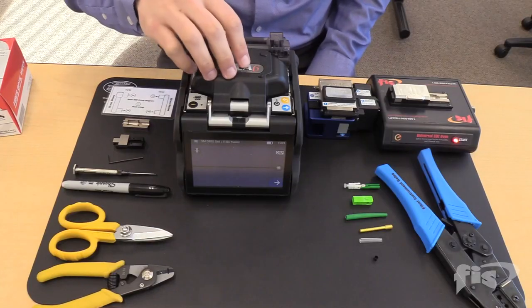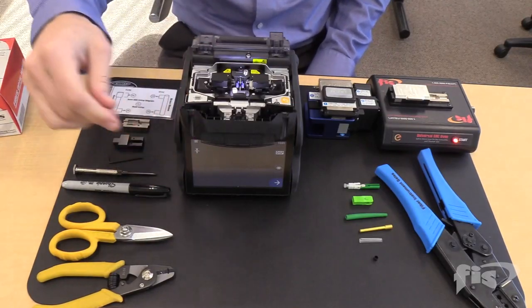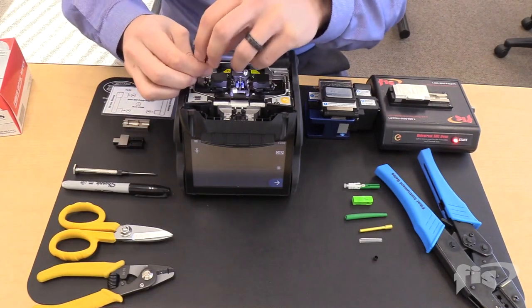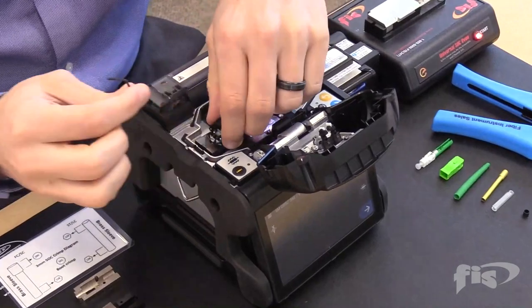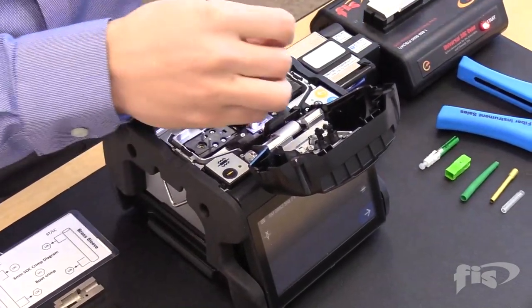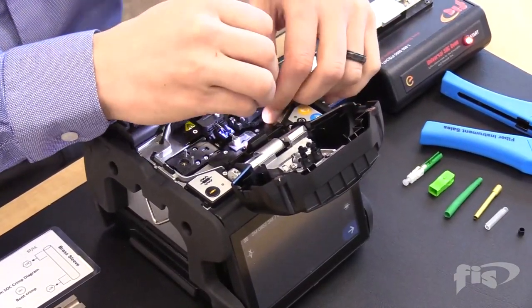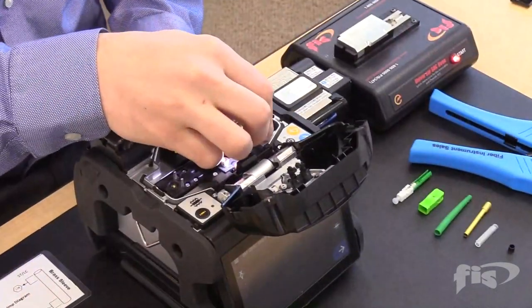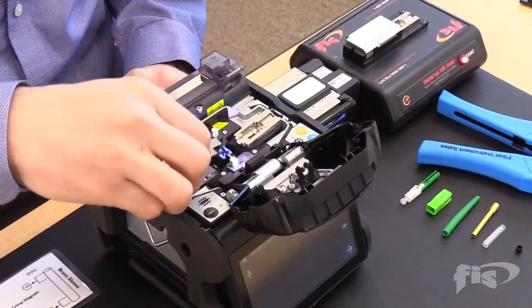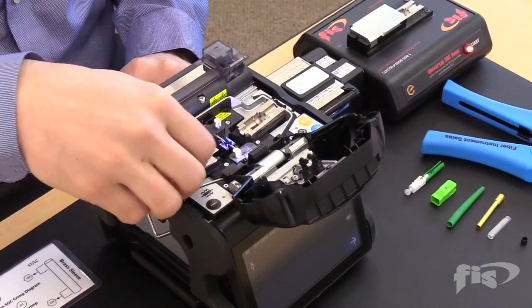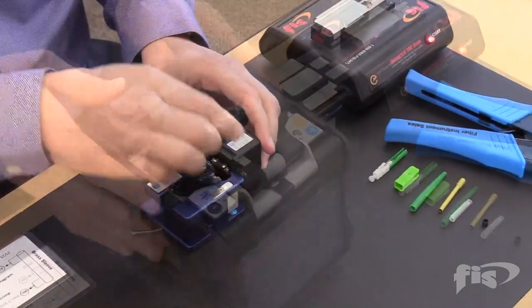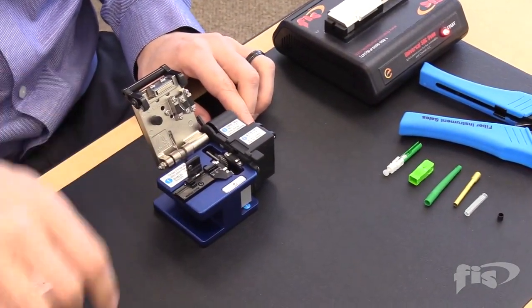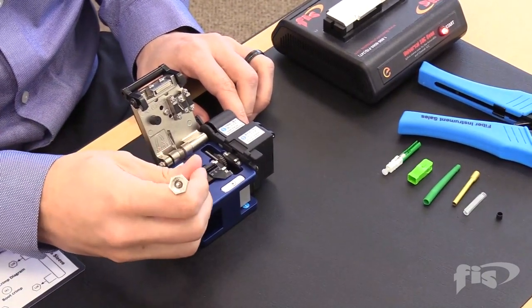To place the FIS splice-on connector holder, take an Allen wrench and unscrew the standard fiber holder from the machine, and place the SOC holder onto the splicer. Also, remove the standard fiber holder on the cleaver, so the cordage can work back and forth between it and the fusion splicer.